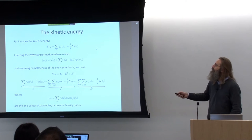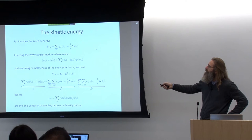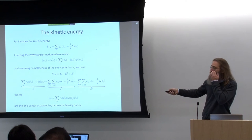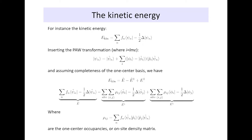That is written here for the kinetic energy. We substitute our PAW approximation for the all-electron wave function, and assume completeness in these local bases — which is always only approximately given. Under this assumption of completeness, the kinetic energy ends up with three contributions: one of purely plane wave nature, one involving only the pseudized partial waves, and one involving only the all-electron partial waves.